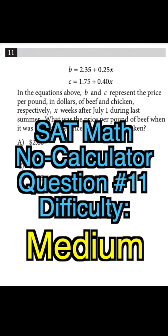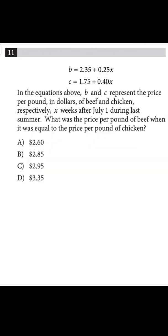SAT math, difficulty level medium. In the equations above, b and c represent the price per pound in dollars of beef and chicken respectively, x weeks after July 1st during last summer. What was the price per pound of beef when it was equal to the price per pound of chicken?